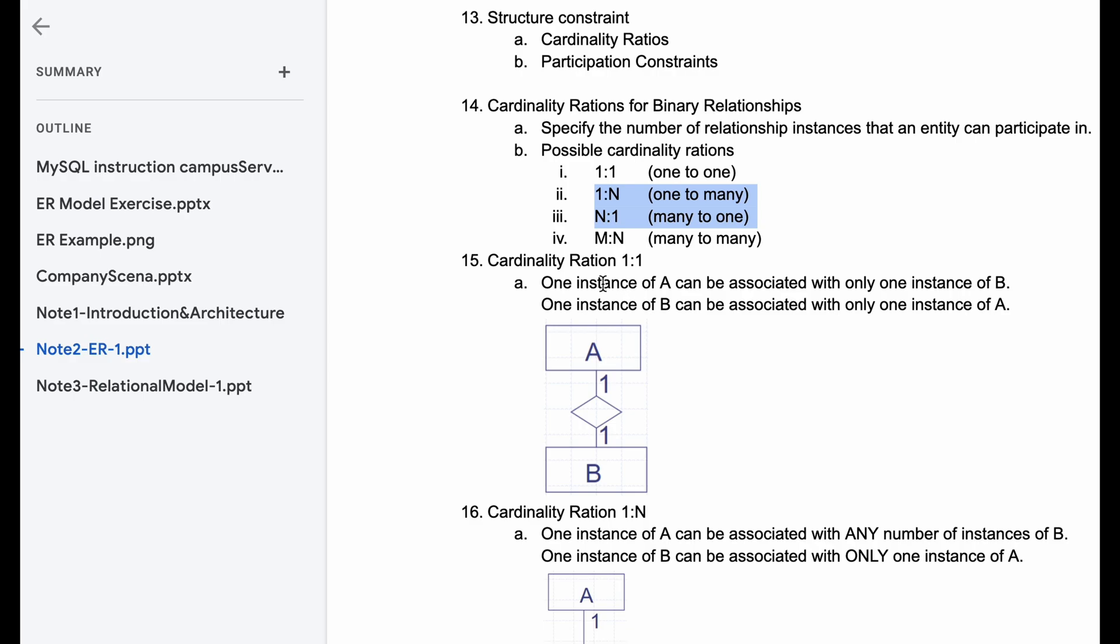So let's look at cardinality ratio one-to-one. With cardinality ratio one-to-one, one instance of A can be associated with only one instance of B, and only one instance of B can associate itself with one instance of A. So we have two entities here, one each, and then we have some relationship between them.